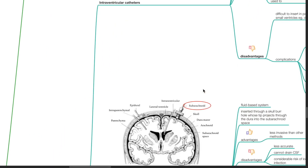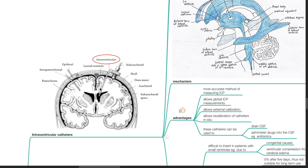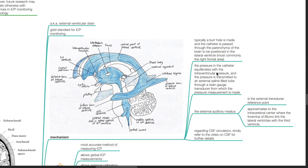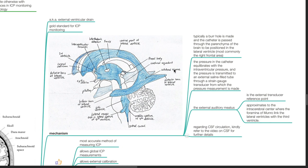Invasive methods. Intraventricular catheters, also known as external ventricular drain. It is the gold standard for ICP monitoring. Mechanism: Typically a burr hole is made and the catheter is passed through the parenchyma of the brain to be positioned in the lateral ventricle, most commonly the right frontal area. The pressure in the catheter equilibrates with the intraventricular pressure and is transmitted to an external saline-filled tube through a strain gauge transducer from which the pressure measurement is made. The external auditory meatus is the external transducer reference point. It approximates to the intracerebral center where the foramina of Monroe link the lateral ventricles with the third ventricle. Regarding CSF circulation, refer to the video on CSF for further details.